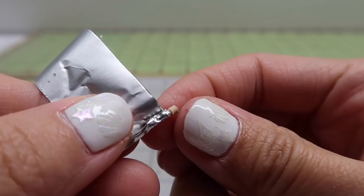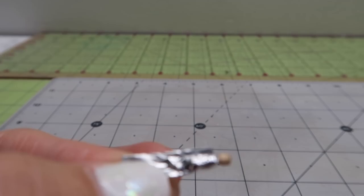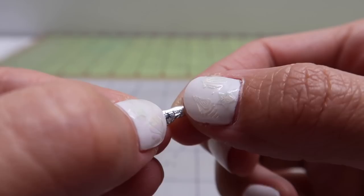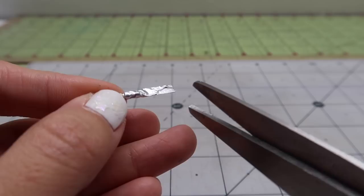Wrap the foil onto the toothpick right underneath the first notch. Wrap it all the way around the toothpick and cut off the excess foil. Then cut off a bit at the end to even it up and fold the end over.